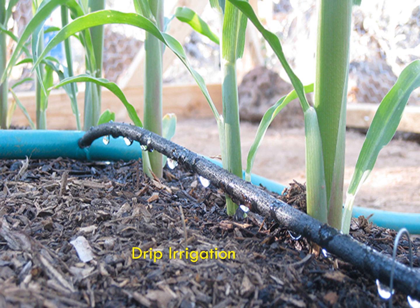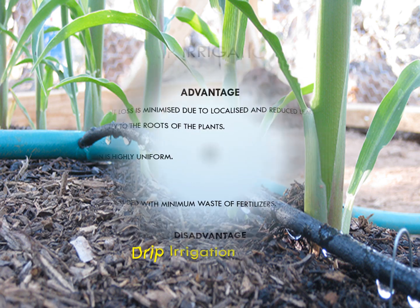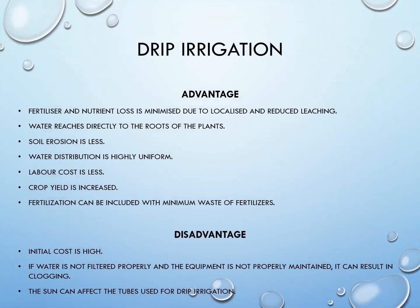This method delivers water directly to plants rather than surrounding areas and keeps soil evenly moist yet full of oxygen. No water is wasted at all. It is very effective in regions where availability of water is poor, but setting up a drip irrigation system is costly, hence it is not used by all farmers.